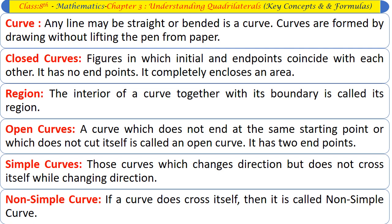Curve: Any line, whether straight or bent, is a curve. Curves are formed by drawing without lifting the pen from paper. Closed curves are figures in which the initial and end points coincide with each other — they have no endpoints and completely enclose an area. The interior of a curve together with its boundary is called its region. Open curves: A curve which does not end at the same starting point is called an open curve — it has two end points.